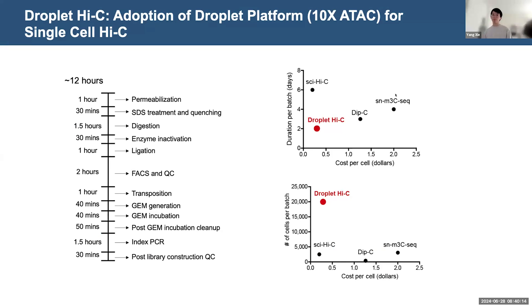Compared to some of the previous methods, Droplet Hi-C has the shortest sample-to-sequencing time. It costs less than 50 cents per cell and can be easily executed by a single person to recover up to 20 thousand cells within an experiment.